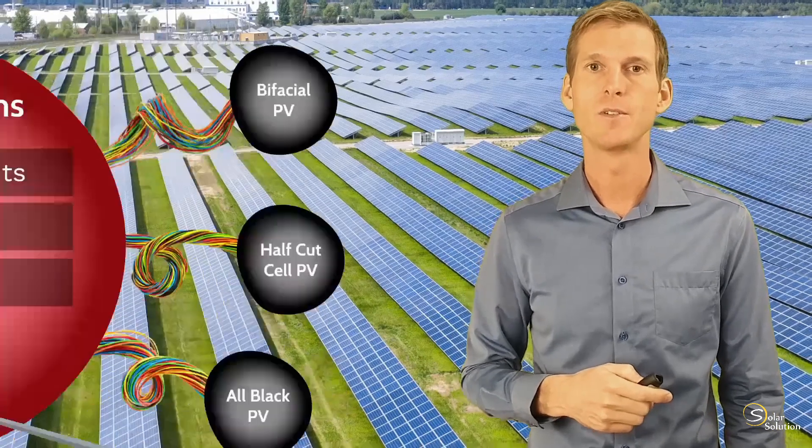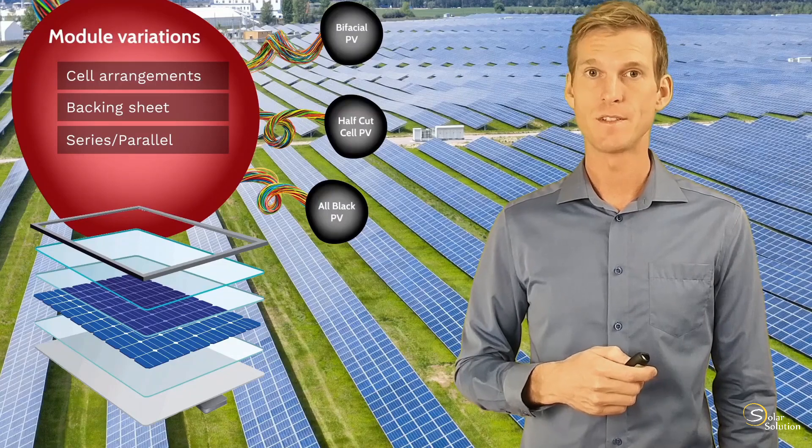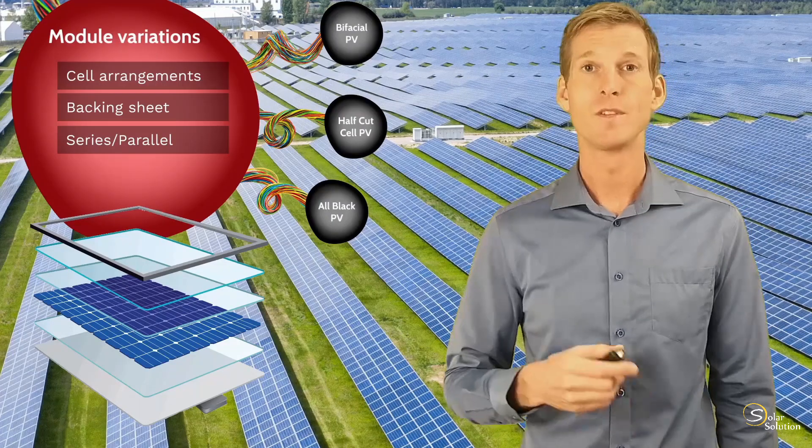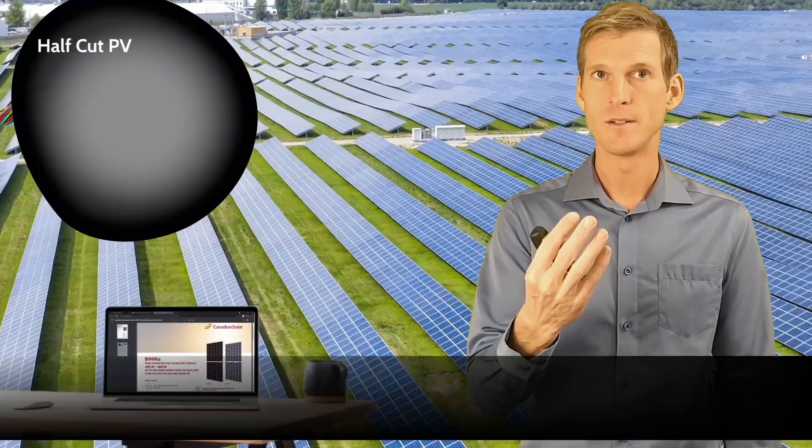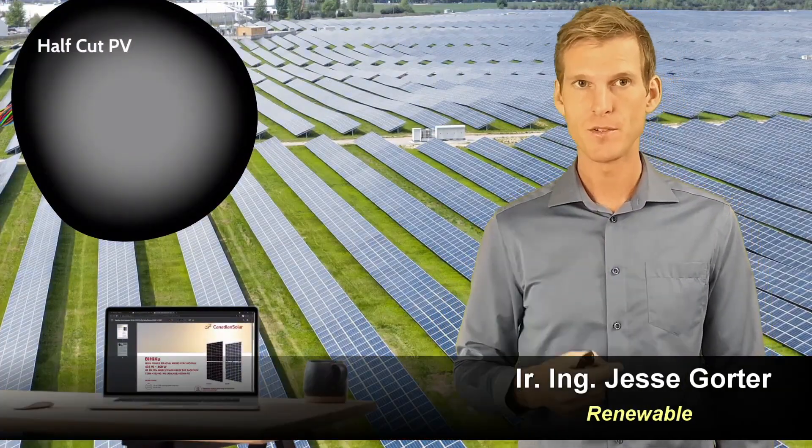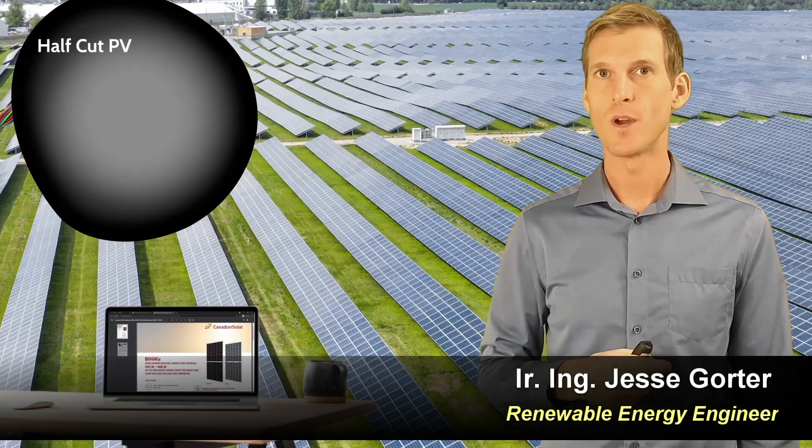So let's go to the next section and look into the second variation, the half-cut cell photovoltaic modules. There are two different terms that are used to describe this variation in the physical appearance of these photovoltaic modules.